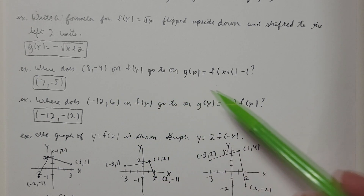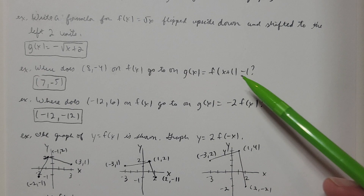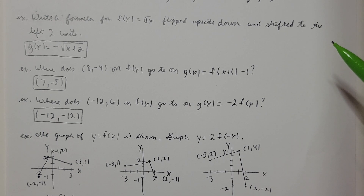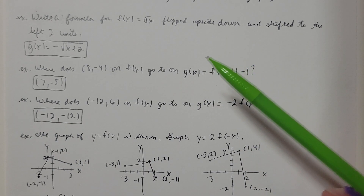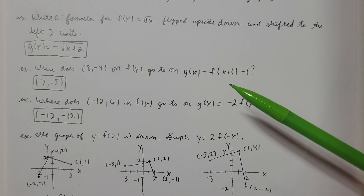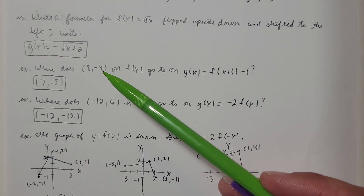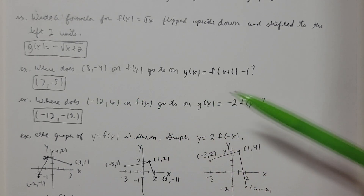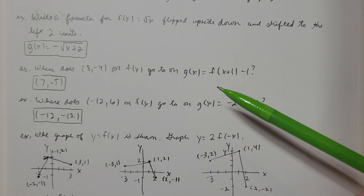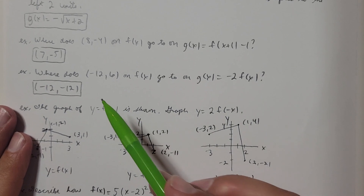Here is another one: where does the point (8, -4) on f(x) go on the graph of g(x) = f(x+1) - 1? I don't need to know what f looks like — I just need to know where this point lands. Replacing x with x+1 means I'm shifting the graph left one unit, so (8,-4) becomes (7,-4). Then the minus one shifts down one unit, giving me (7,-5).